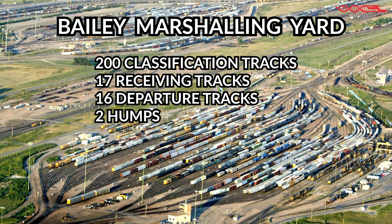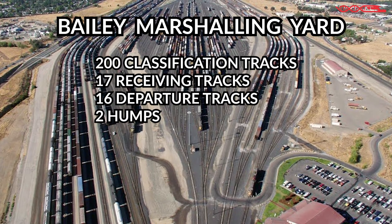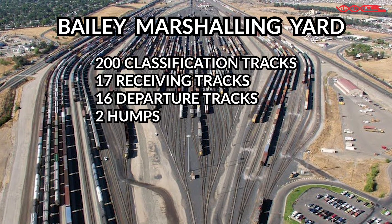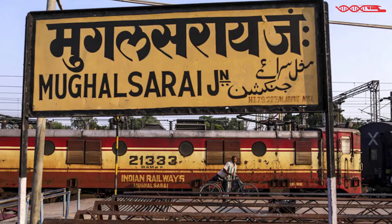This marshaling yard has more than 200 classification tracks, 17 receiving tracks, 16 departing tracks, and two humps located on the eastern and western sides of the marshaling yard. In Asia, the biggest marshaling yard is located in India and is called Mughalsarai Junction.